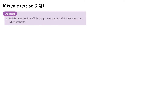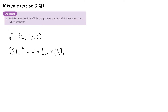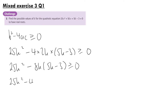Finally, the mixed exercise questions. Question 1: find the possible values of k for the quadratic 2kx squared plus 5kx plus 5k minus 3 to have real roots. For real roots we need the discriminant b squared minus 4ac to be greater than or equal to 0. Here b is 5k, so b squared is 25k squared, minus 4 times 2k times (5k minus 3) is greater than or equal to 0. So 25k squared minus 8k(5k minus 3), giving 25k squared minus 40k squared plus 24k, is greater than or equal to 0.